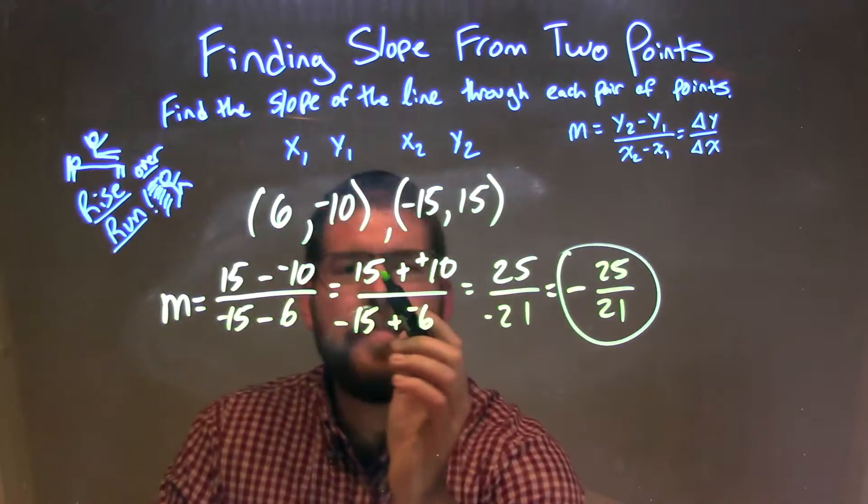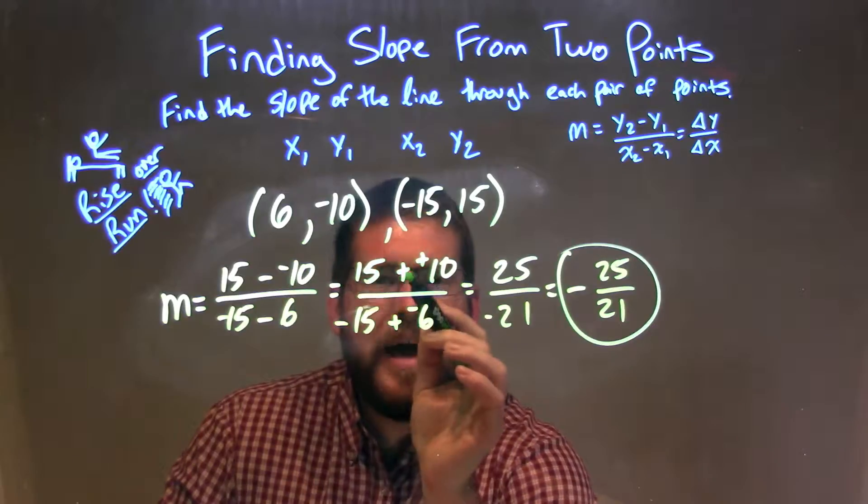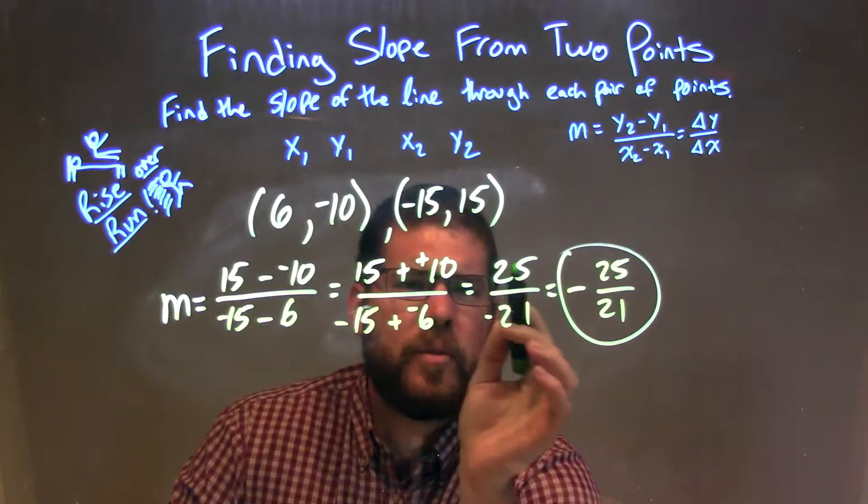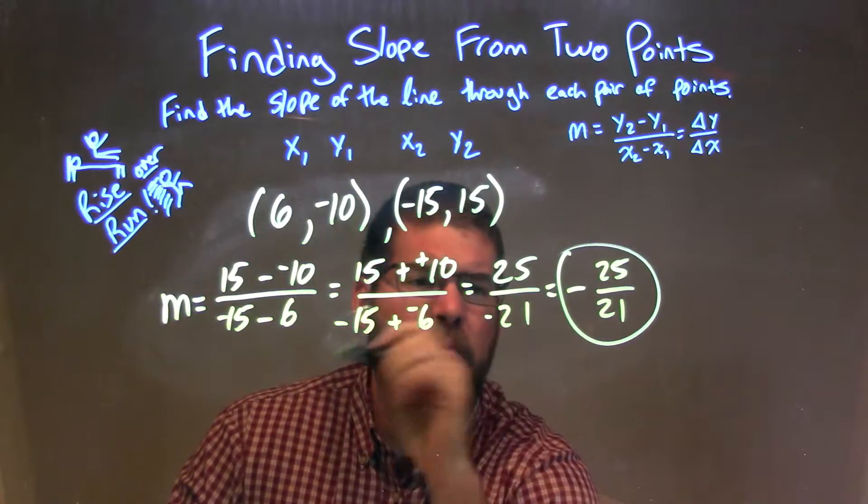I then simplified that. I made my subtraction negative to be adding a positive, and the subtraction to be adding negative. Then I simplified the numerator to get 25, and simplified the denominator to get negative 21.